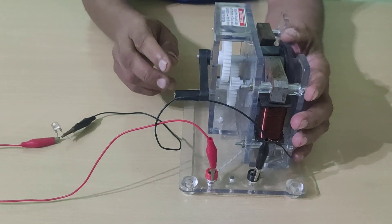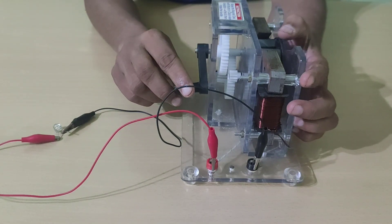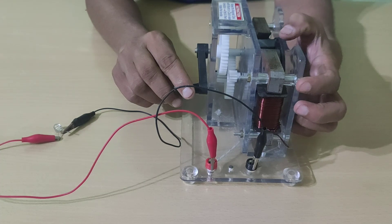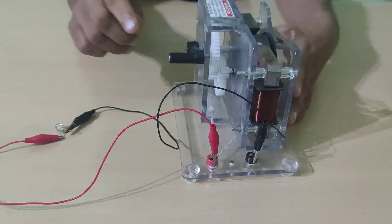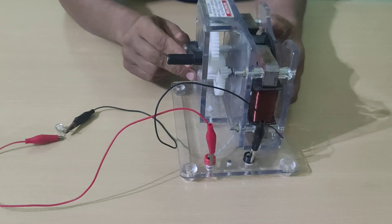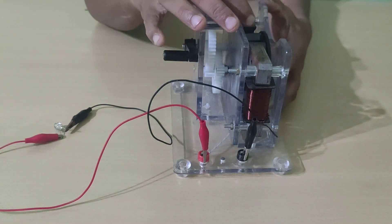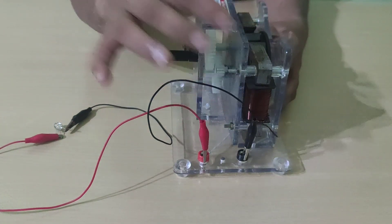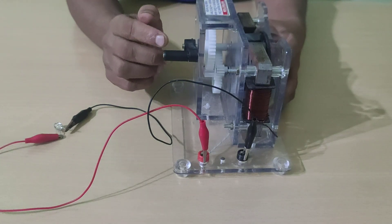Let's see whether the LED glows. For this we'll rotate this handle. The LED has glown and we have seen that when a magnet moves between these coils, electric current is generated.